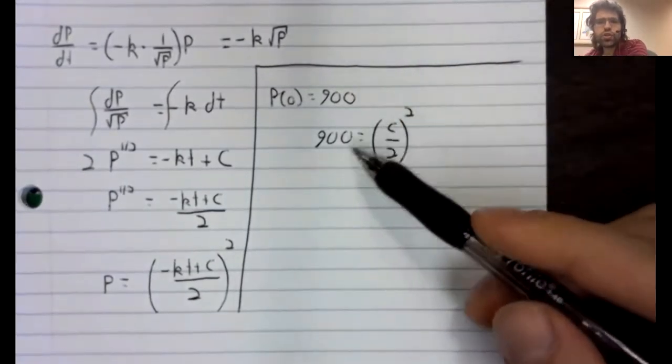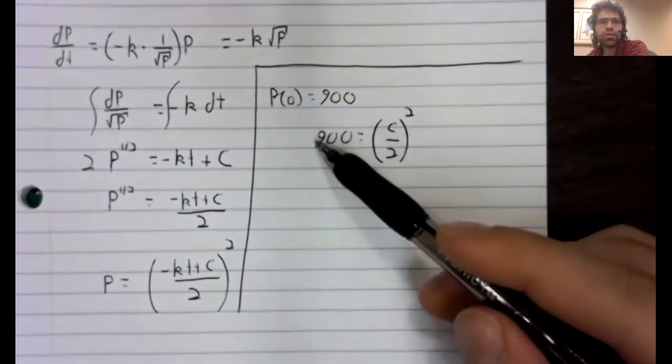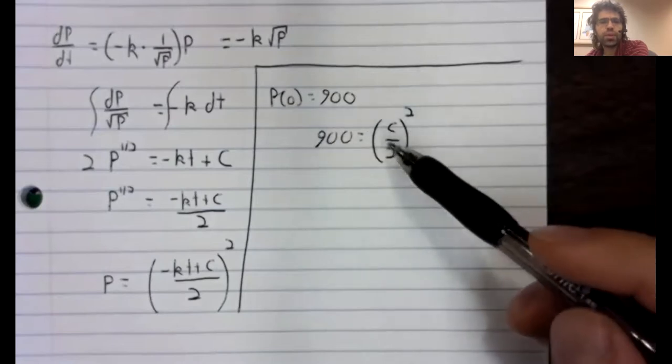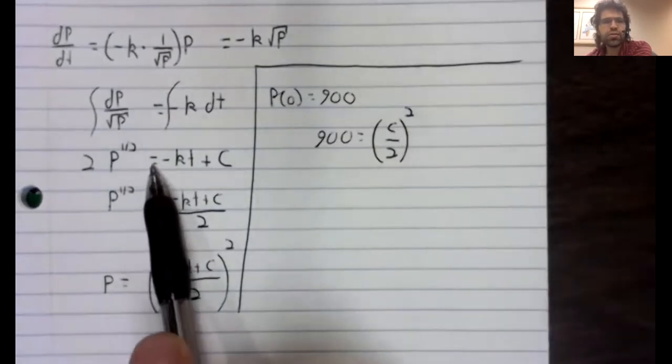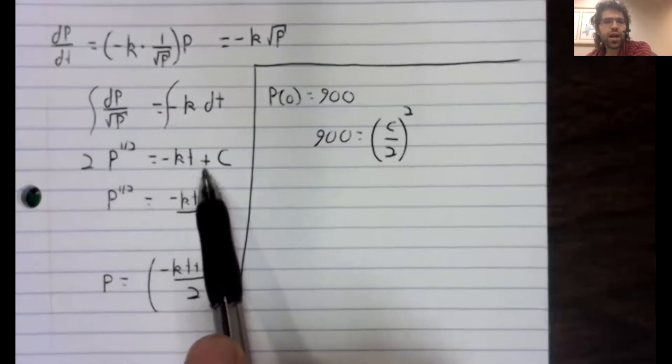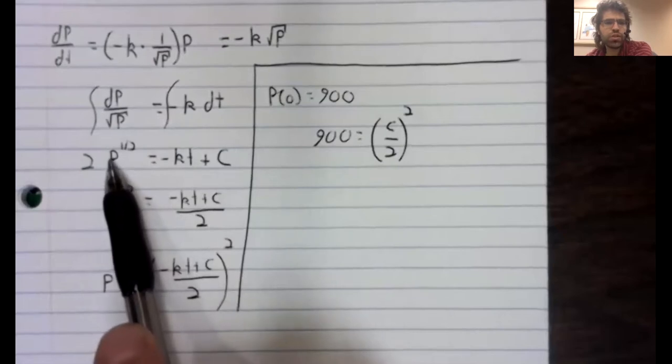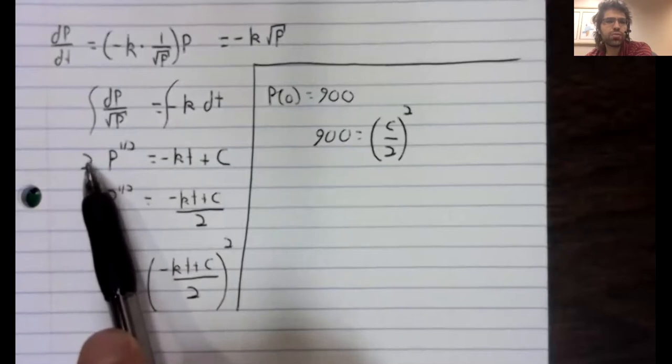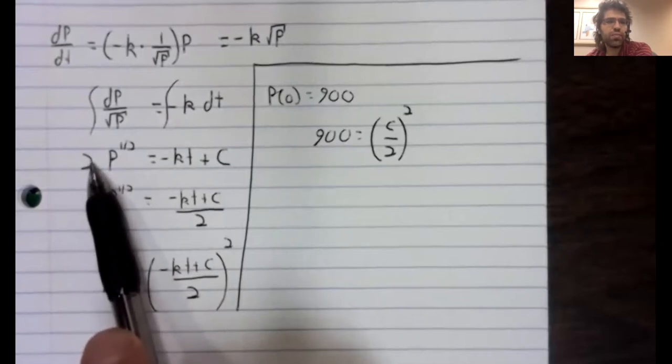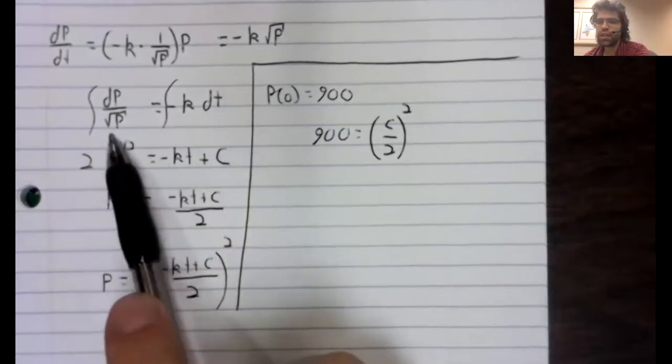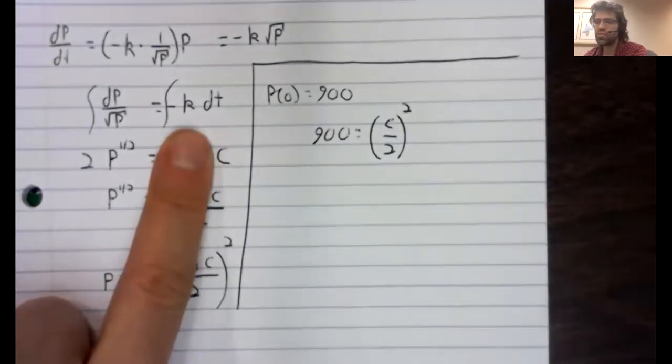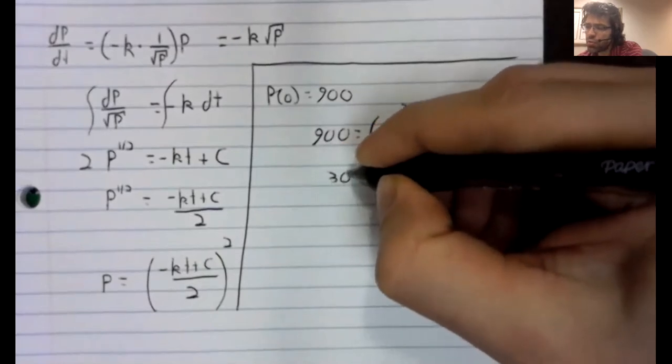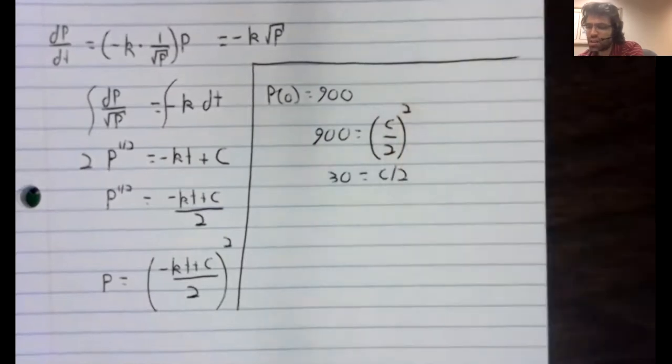This actually has two solutions. We could take the positive square root or the negative square root. But c has to be positive. How do I know c has to be positive? Because of this equation. At time zero, now the population is positive. So the square root of the population is positive. So two times that square root has to be positive. So at time zero, the left hand side of this equality is positive. And the right hand side equals c. Ergo c is a positive constant.